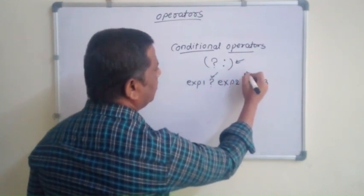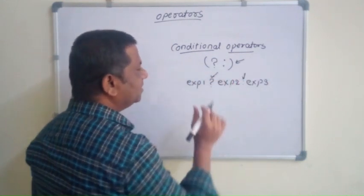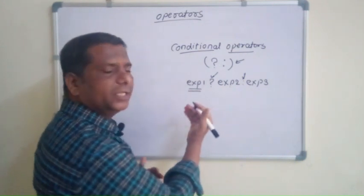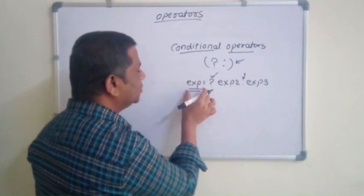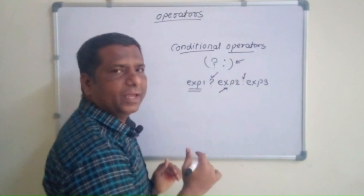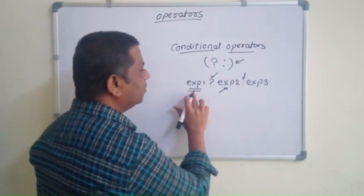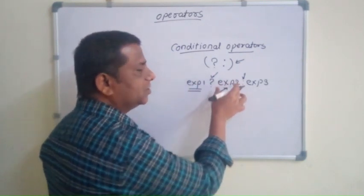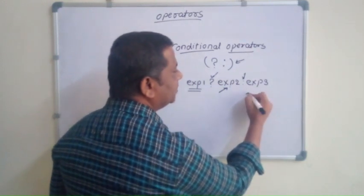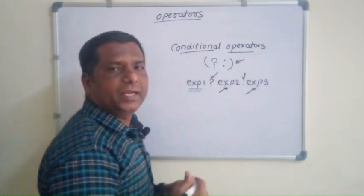Yaha pere dhekko, yhe hai conditional operators. Ab dhekko, yhe expression kaise work hotha hai? Yaha pere, is expression me kuch condition check ki jayegi. So if condition is true, then expression 2 is executed. Ager yhe condition true hothi hai, to expression 2 execute ho jayegah. Otherwise condition false hothi hai, to expression 3 execute ho jayegah.